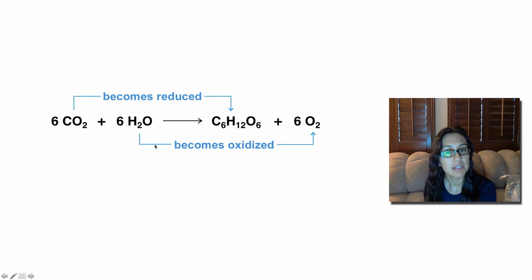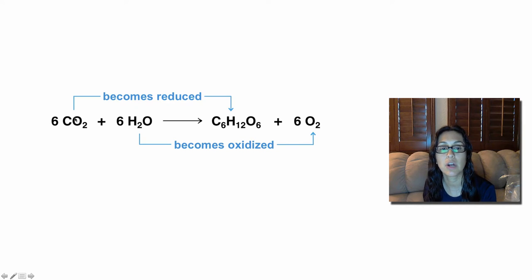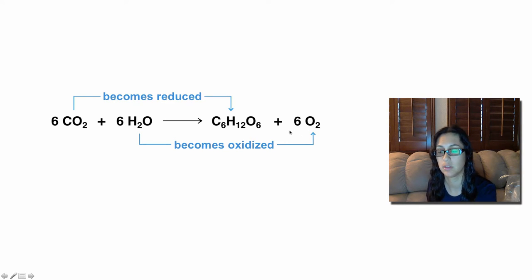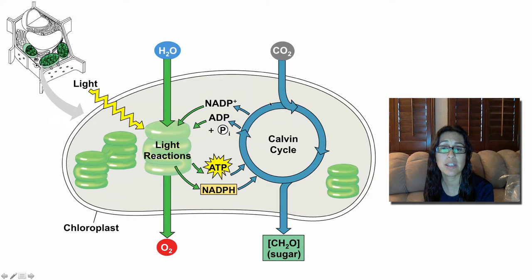Our basic equation for photosynthesis: six carbon dioxide molecules and six water molecules are going to get you glucose and six oxygen molecules. When you look at the equation, you can tell a lot from it — your carbon dioxide is going to be reduced by adding hydrogens on, and your water is going to be oxidized by losing hydrogens. The two stages of photosynthesis are the light-dependent reactions and then the Calvin cycle.